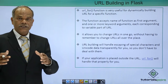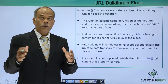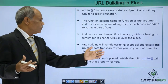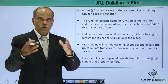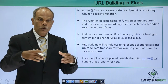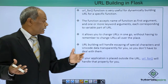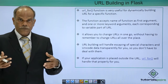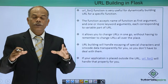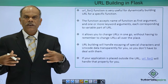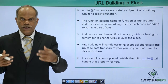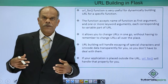Another advantage of url_for is that if your application is placed outside the root URL, then the url_for function will automatically handle that for you. So all these are some of the advantages of this url_for function. What we shall do is write a small Python script in which url_for is used and let us see the output. Let us demonstrate the example.